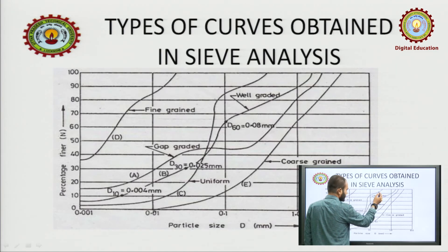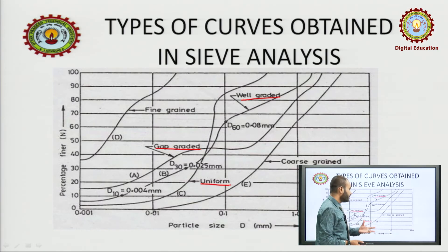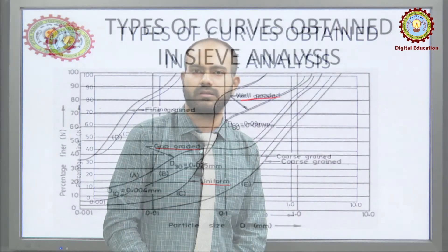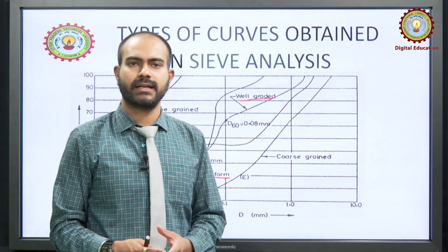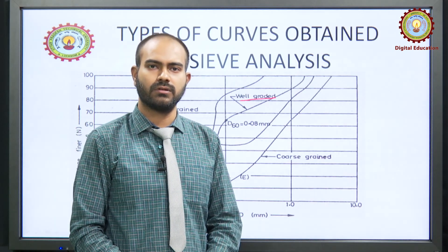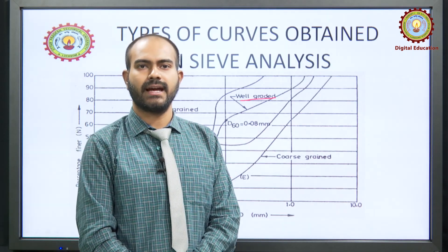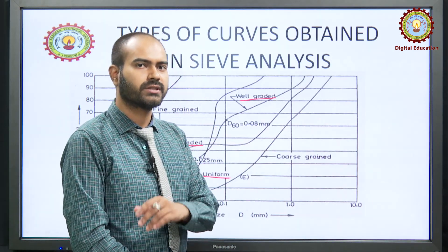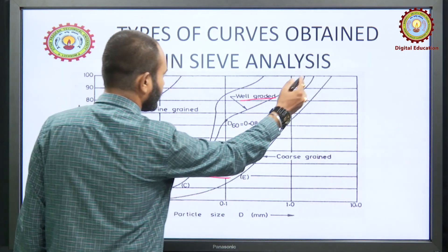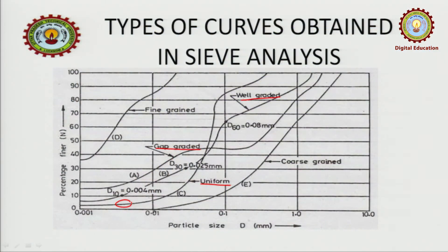Looking at this diagram, first of all you can see a coarse grained soil and a fine grained soil. These are differentiated just by particle size. It is called fine grained because the maximum part of the curve falls in the finer region, while it is coarse grained because the maximum part falls in the coarser region.